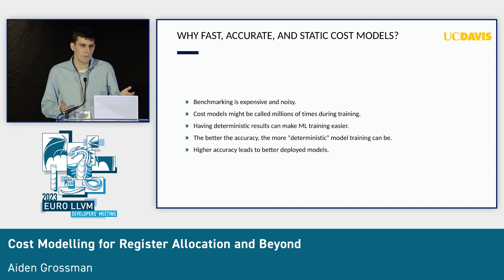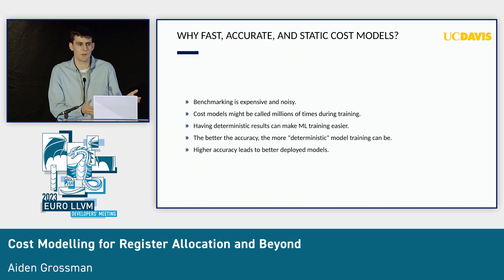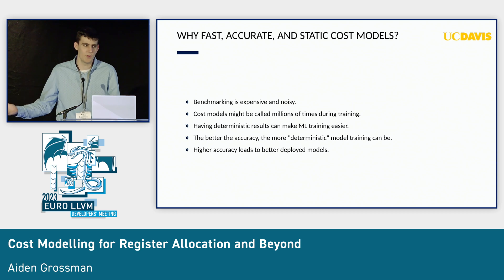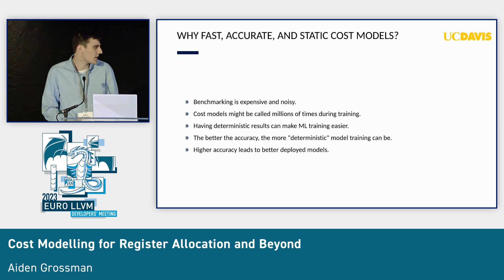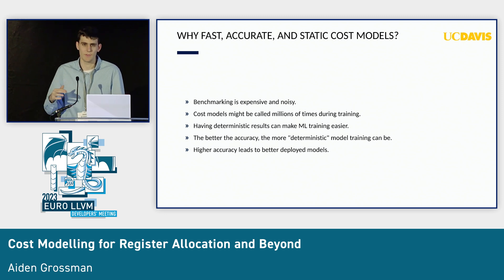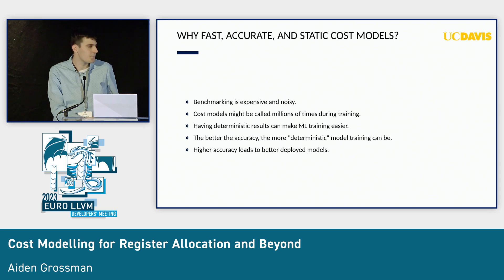Currently, we're using a very basic linear cost model. You're able to train machine learning models that will improve performance, but you'll train a bunch of them and then select the one that performs the best — so the training isn't very deterministic in the performance that comes out of it. Higher accuracy will also lead to better peak performance from the models.